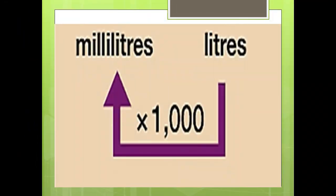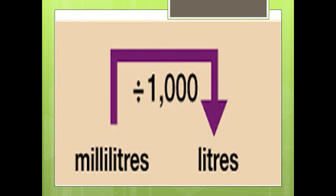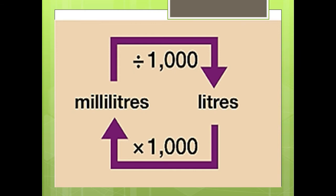If we want to convert liters to milliliters, we have to multiply the value by 1000. In the same way, if we want to convert milliliters to liters, we have to divide by 1000.